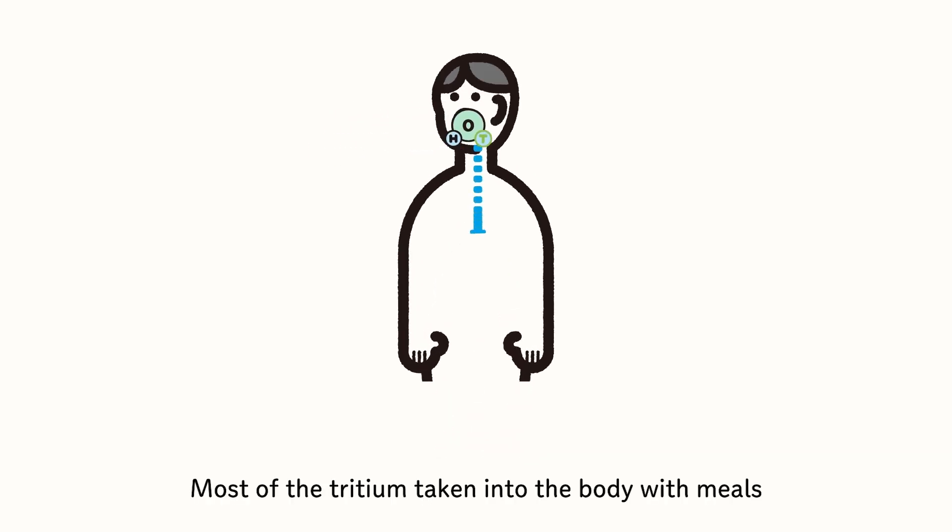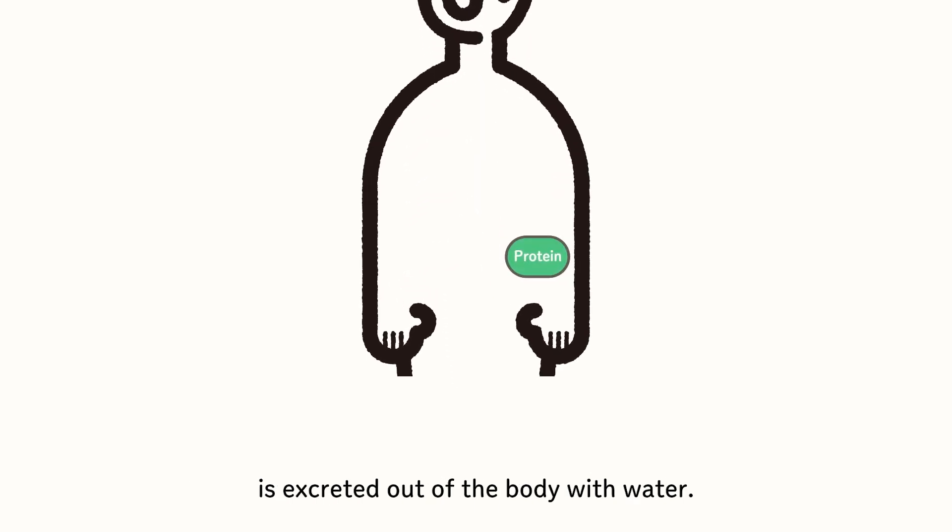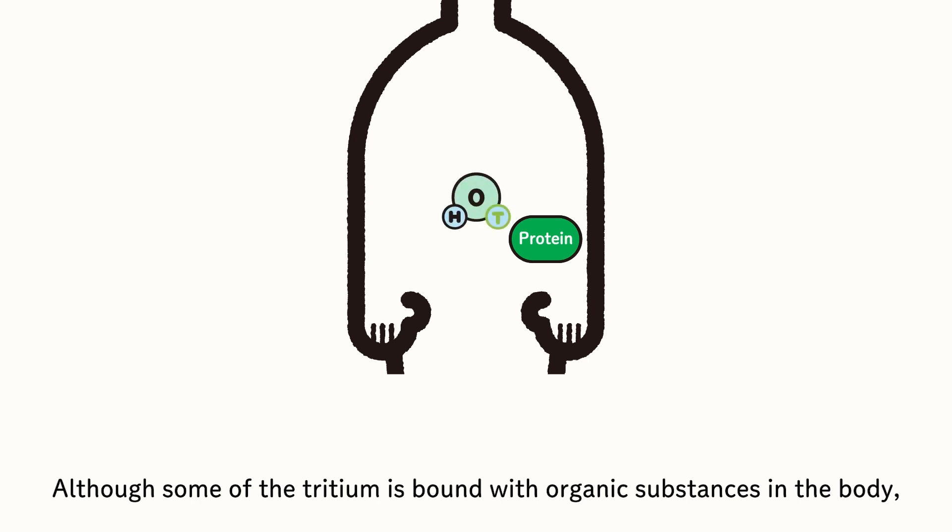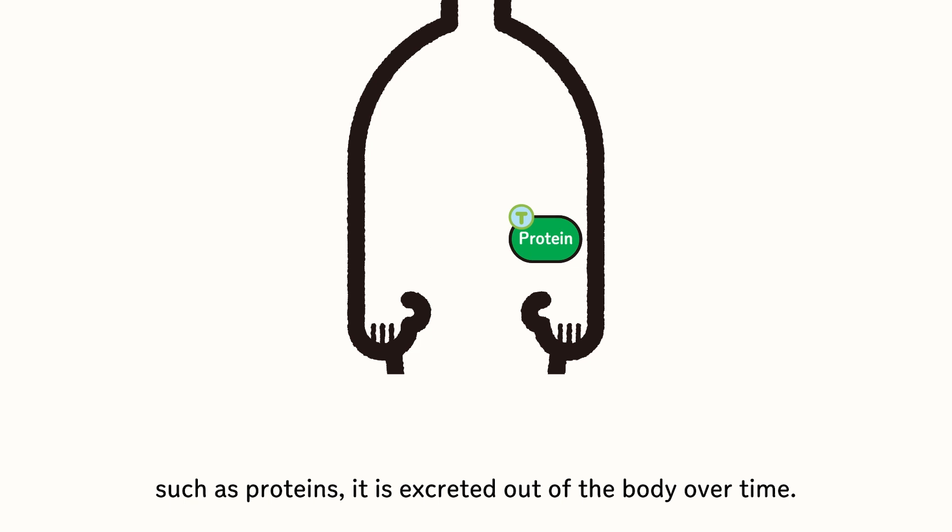Most of the tritium taken into the body with meals is excreted out of the body with water. Although some of the tritium is bound with organic substances in the body, such as proteins, it is excreted out of the body over time.